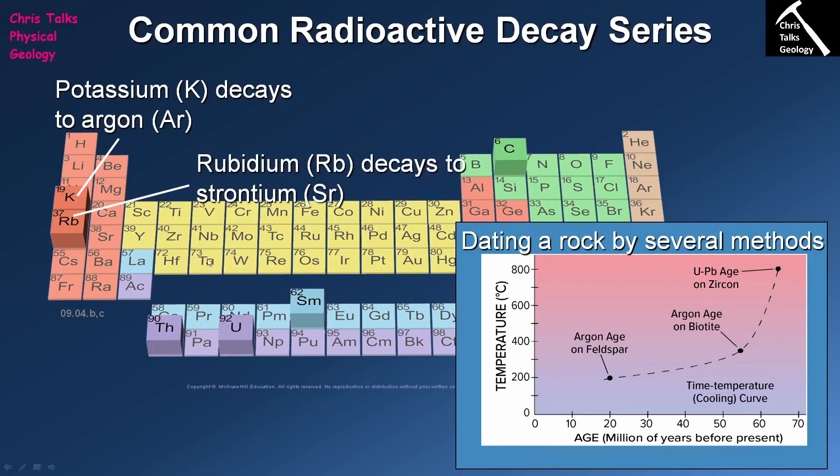Another dating mechanism is rubidium-strontium dating, which is quite commonly used with minerals like feldspar. It is especially helpful for samples that are very very old, and so we tend to use rubidium-strontium dating quite a lot when we actually date meteorites.